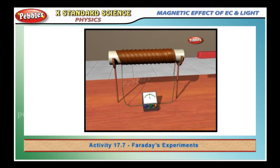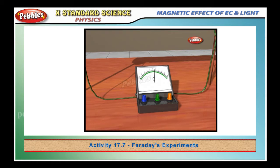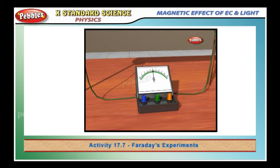We take the strong bar magnet and move its north pole toward the end B of the coil. Here we can observe a deflection in the galvanometer. There is a momentary deflection in the needle of the galvanometer, toward the right side, because the magnet approaches the coil.